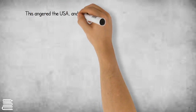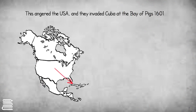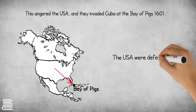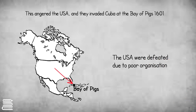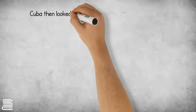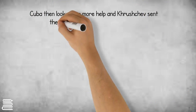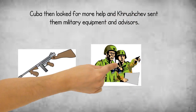This angered the USA, and in 1961 they invaded Cuba, but it was a failure and they were defeated at the Bay of Pigs due to bad organization. This made Cuba look for even more assistance, and Khrushchev sent them military equipment and advisers.